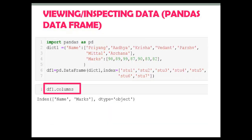Next, columns. The columns attribute of a pandas DataFrame returns the column labels of the given DataFrame. In our DataFrame the columns are name and marks, so df1.columns will display those column labels.